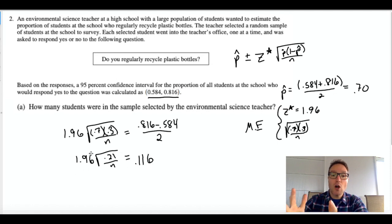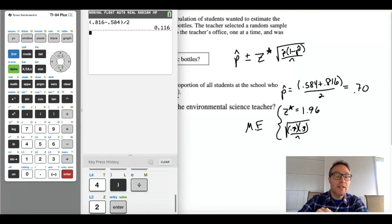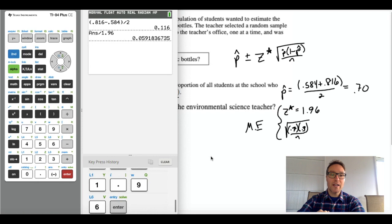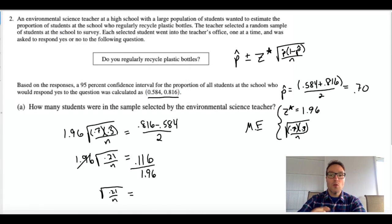Okay, now what do I do? This is all algebra. I'm going to divide both sides by 1.96. Again, I'm going to probably go to a calculator for that. So 0.116 divided by 1.96, let's find out what we get. 0.05918, and you want to have three-digit accuracy in your final answer, so I'm not going to round until the very end. So I'm going to keep around five or six digits of accuracy.